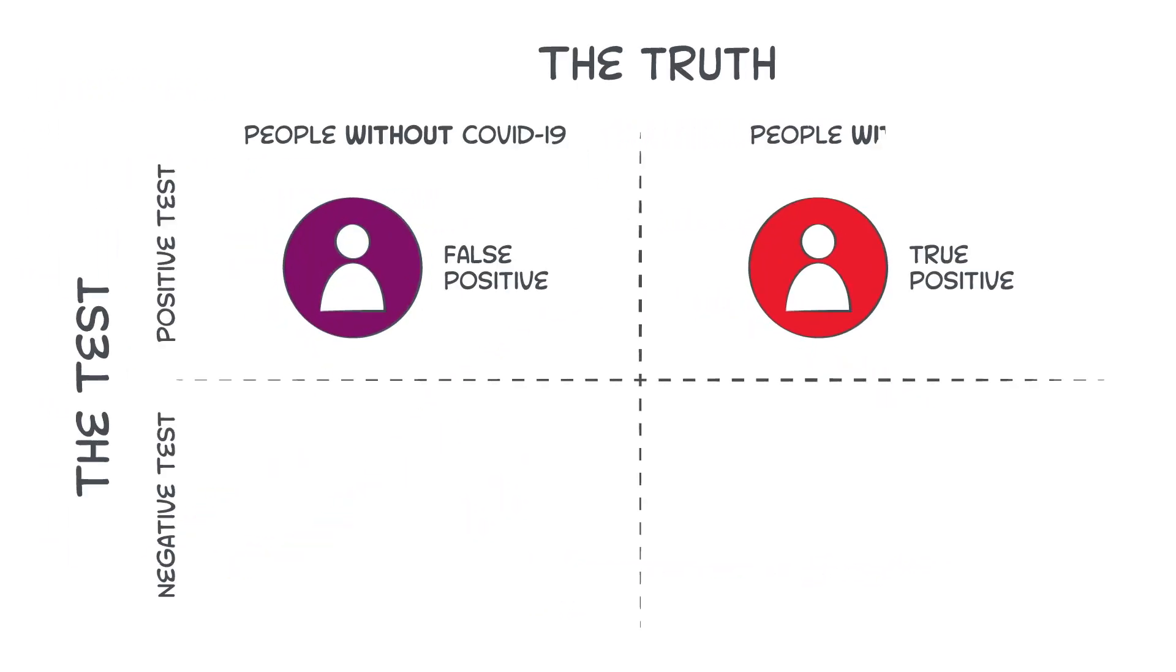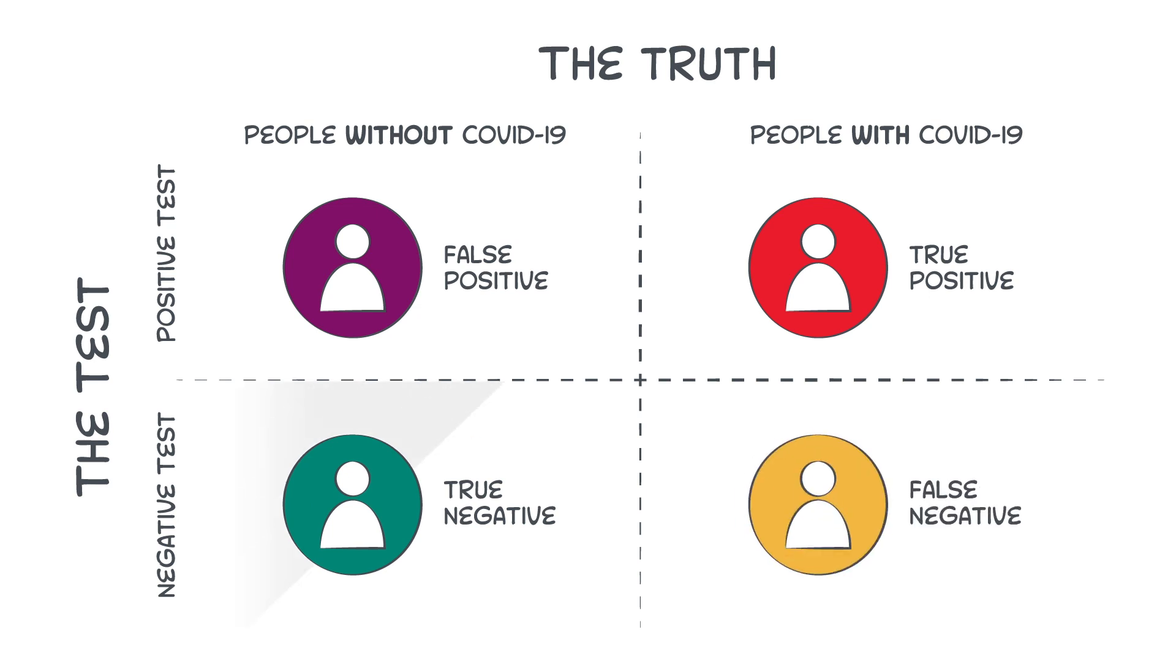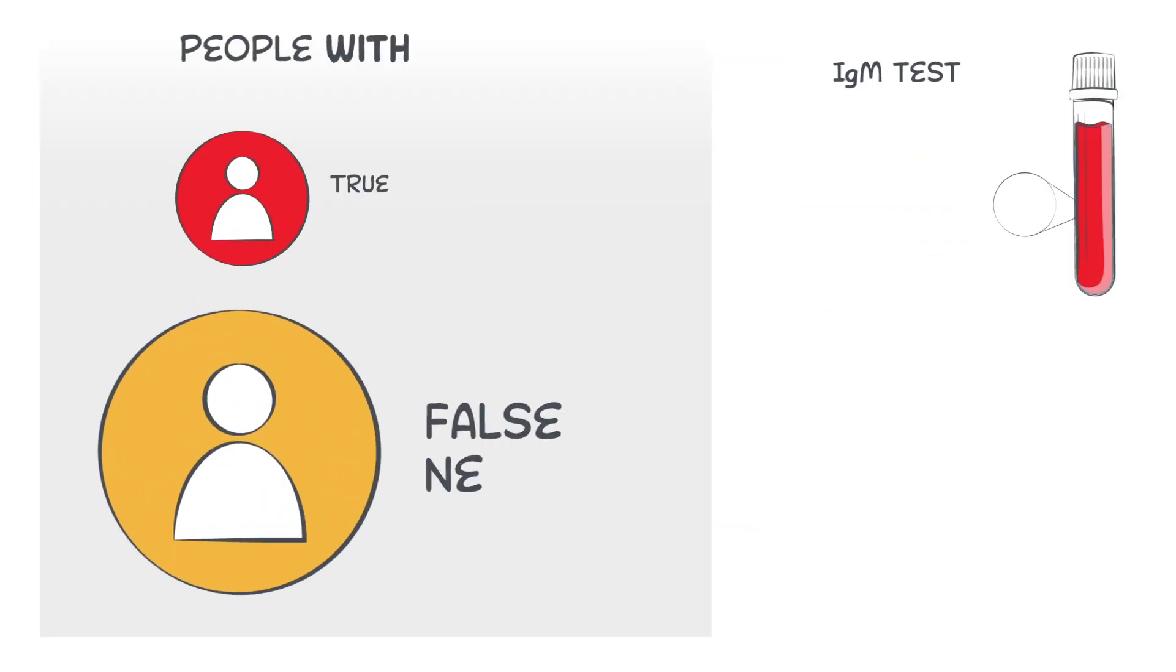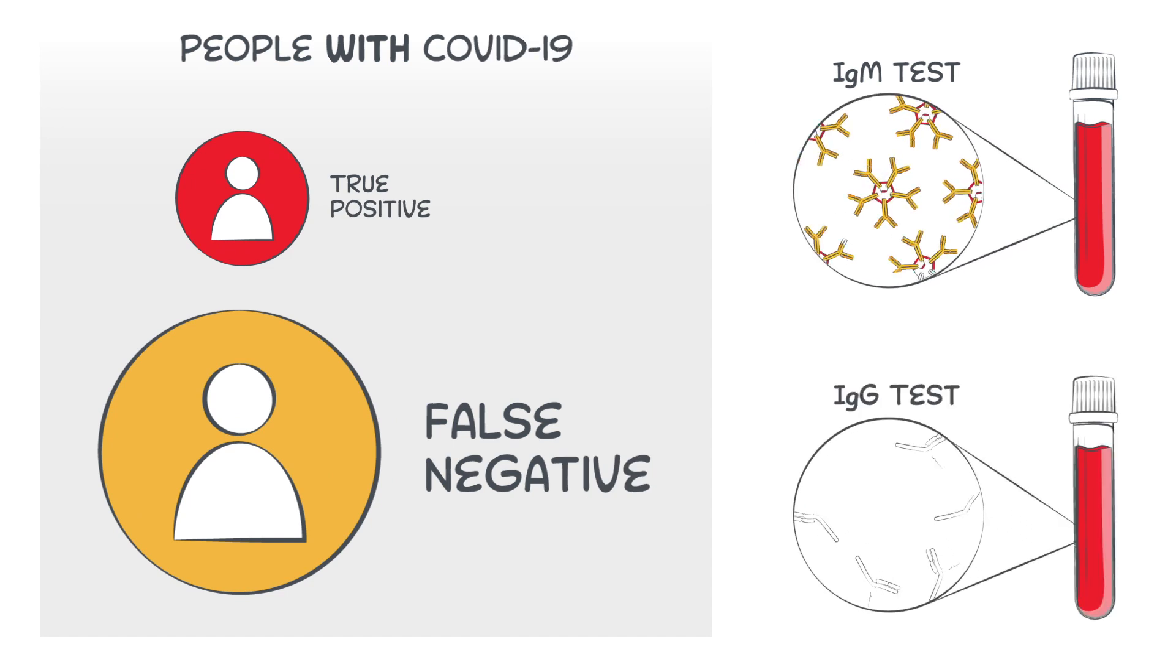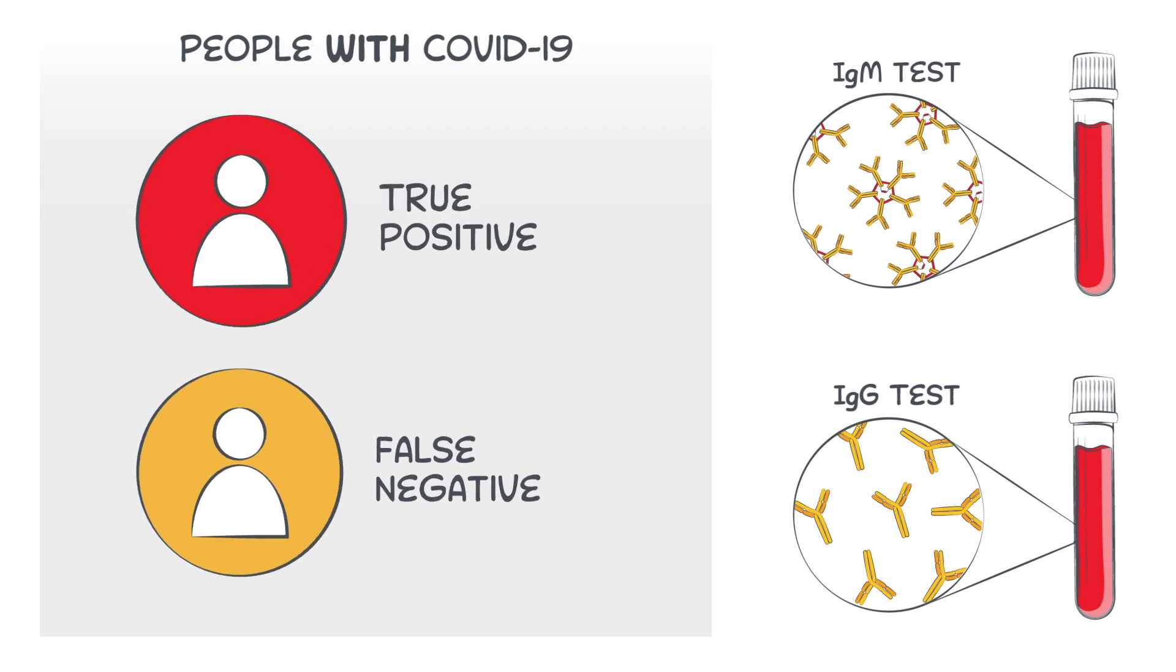Recent studies have identified asymptomatic individuals with a negative PCR diagnostic test result and a positive IgM test, suggesting they may have had a recent infection but with low viral load. Both the IgM and IgG assays are able to identify antibodies even in asymptomatic individuals.